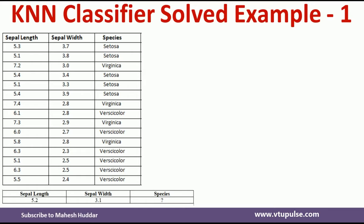First, what we need to do is calculate the distance from the new example to all 15 examples. To calculate the distance, we can use either the Euclidean distance formula, the Manhattan distance formula, or any other distance formula. In this example, I am going to use the Euclidean distance formula.